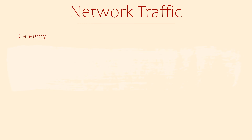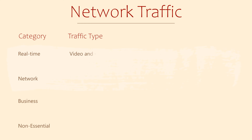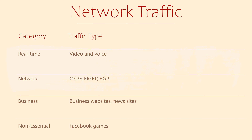We configure QoS to identify network traffic and categorize it. For example, we may create a real-time category which contains voice and video traffic — this type of traffic is sensitive to network congestion and is usually high priority. Another category might be for network management and contain routing updates. There might be a category for business critical applications and websites, and finally, a category for non-essential traffic. QoS handles each of these categories in different ways, according to their needs.